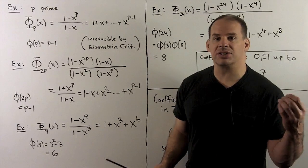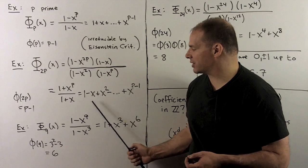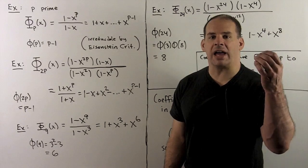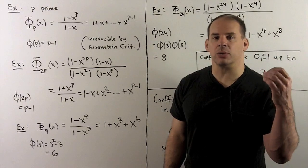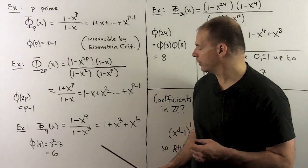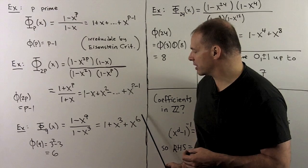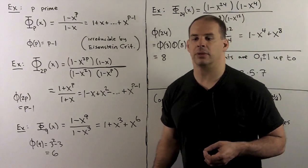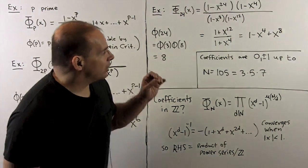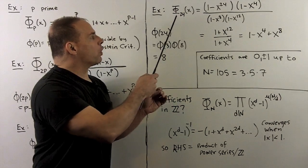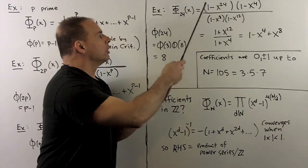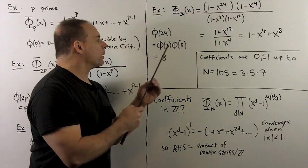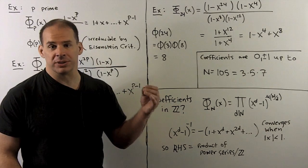For an example with a square: φ₉. The factors are (x⁹ − 1) and (x³ − 1); note the factor (x − 1) has exponent μ(9) = 0 since 9 has a square, so it doesn't occur. Dividing gives 1 + x³ + x⁶. The degree checks out: φ(9) = 3² − 3 = 6. Final example: φ_{24} has four factors; reducing in stages gives 1 − x⁴ + x⁸. The degree: φ(24) = φ(3)·φ(8) = 2·4 = 8. That checks.